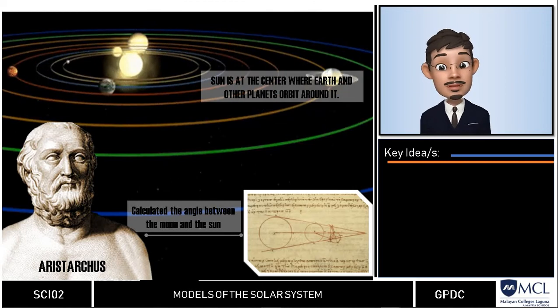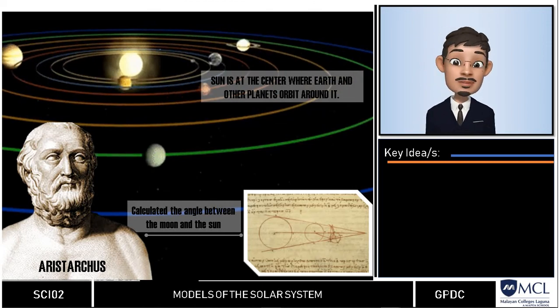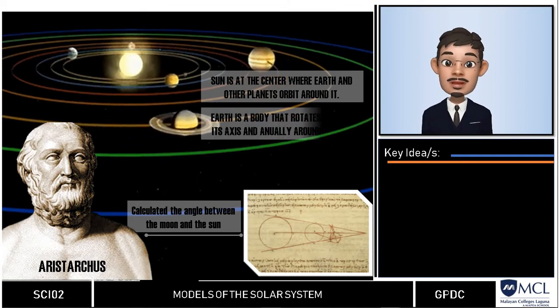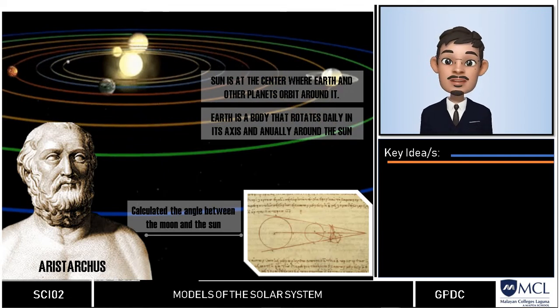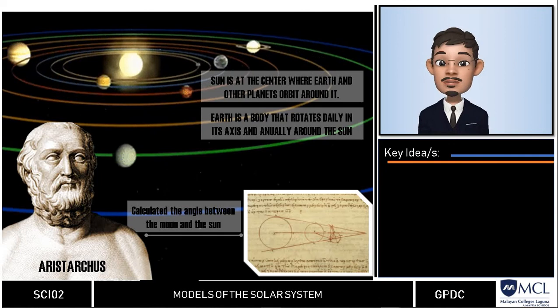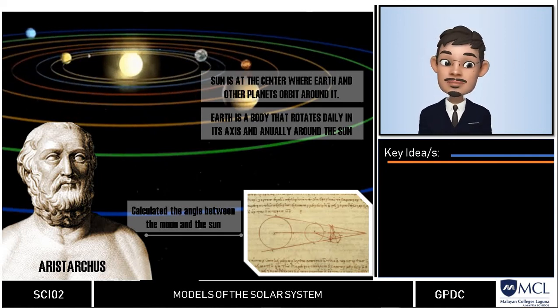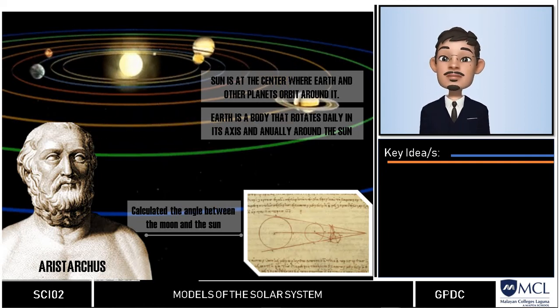His findings made him propose a model that placed the sun at the center of the universe with earth and the planets moving around the sun. In Aristarchus' model he described earth as a body that rotated daily around an axis and revolved annually around the sun. Unlike the astronomers before him, he mentioned that the stars must be fixed in a large sphere with the sun at the center.